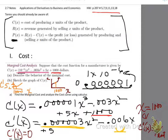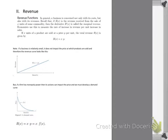Moving to the next topic — revenue. A business is concerned not only with cost but also with revenue. Revenue is a function of what you produce: if you produce 10 units and sell them for $5 each, your revenue is $50. In the past we were often given a revenue function directly and just took the first derivative to maximize it, but that's not generally how it works.